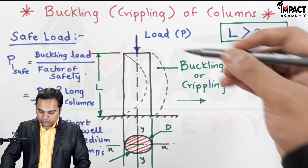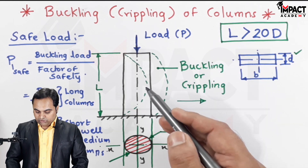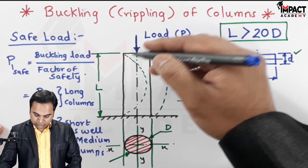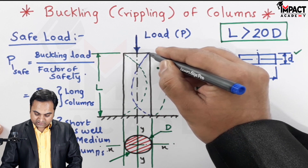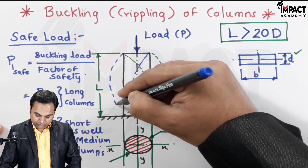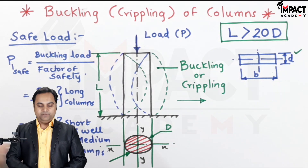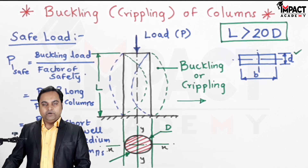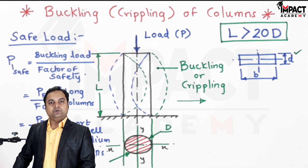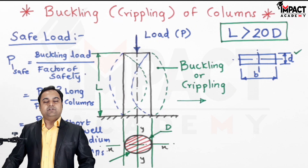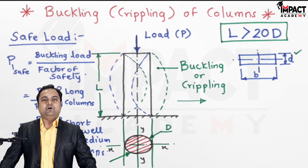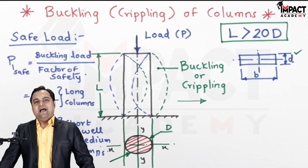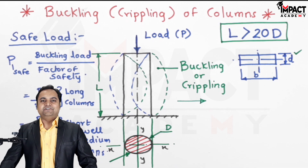So we have seen that when an axial load is kept on a long column, it moves in a lateral direction — either right or left. This lateral movement is not desired because the load would be unstable and the column would fail. To avoid this, we find the safe load to keep over the column, which avoids buckling or crippling. That was regarding the buckling of columns. If you find my videos helpful, please like, share, comment, and subscribe. Thanks for watching.